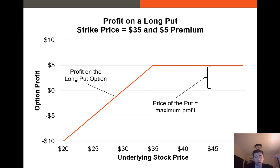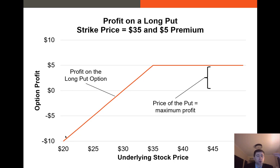On the short side of the put option we get the exact opposite. You sell the put and receive the $5 premium. But if the underlying value of the stock falls, you are on the hook for the difference between the strike price and the underlying stock price. This means you have to buy the underlying stock at the strike price even though the actual stock price is well below it.